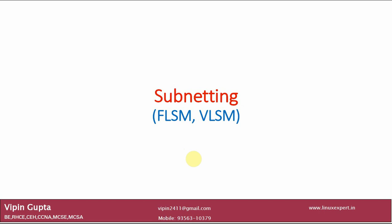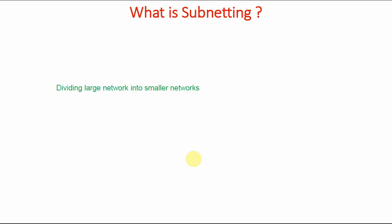But before moving towards those concepts, first we need to understand why we need subnetting. The need for subnetting is dividing a large network into smaller networks. Now sometimes, if you are using a Class C address, you have 256 systems you can bring into networking. Out of 256, two are reserved, so we can do networking of 254 systems. But sometimes we do not have that many systems — suppose we have only 40 systems. For 40 systems, if you are going to use the whole Class C network, there is a lot of wastage of addresses.